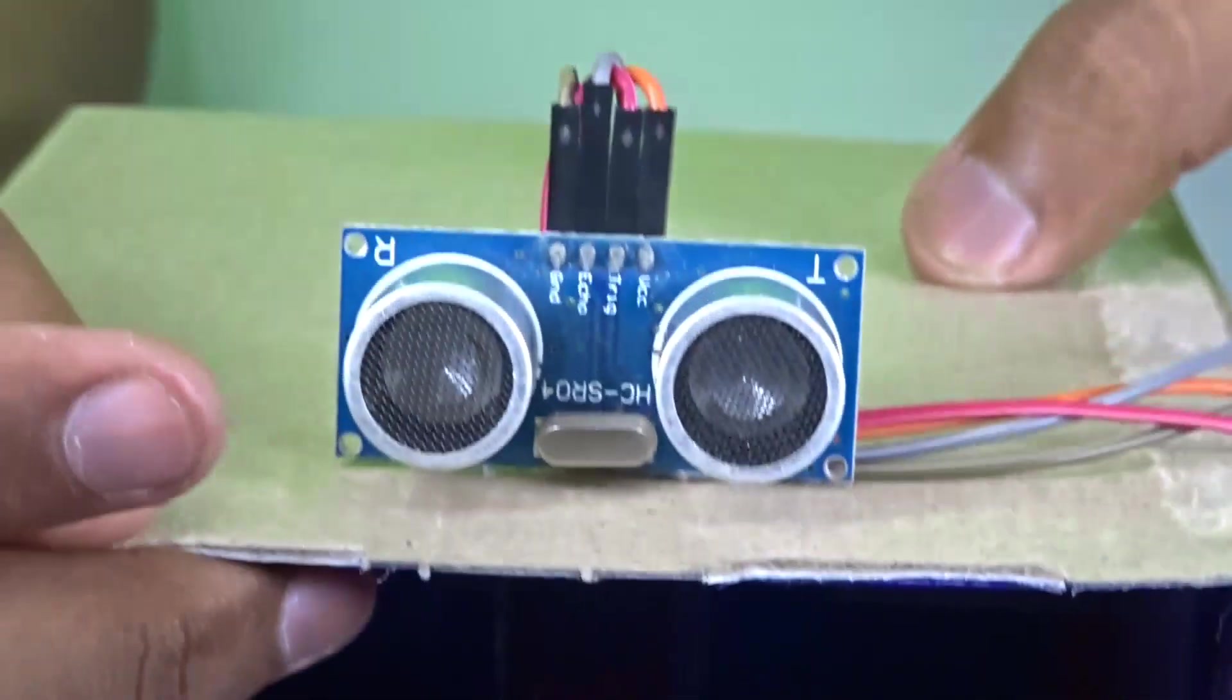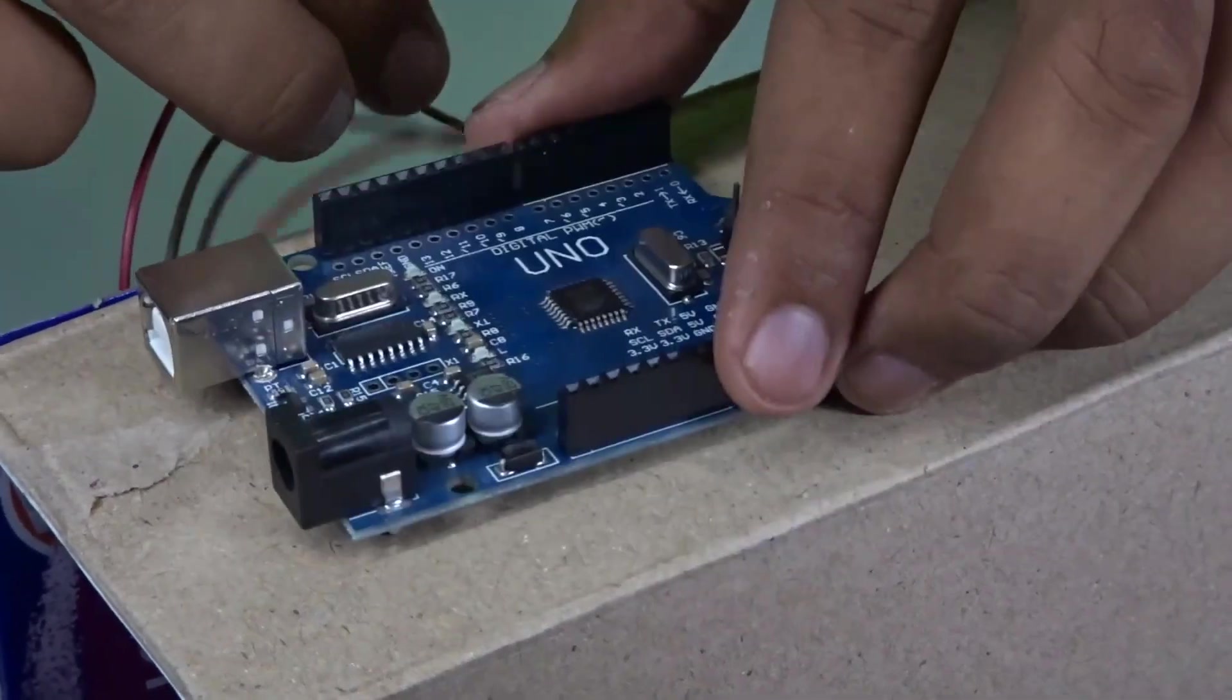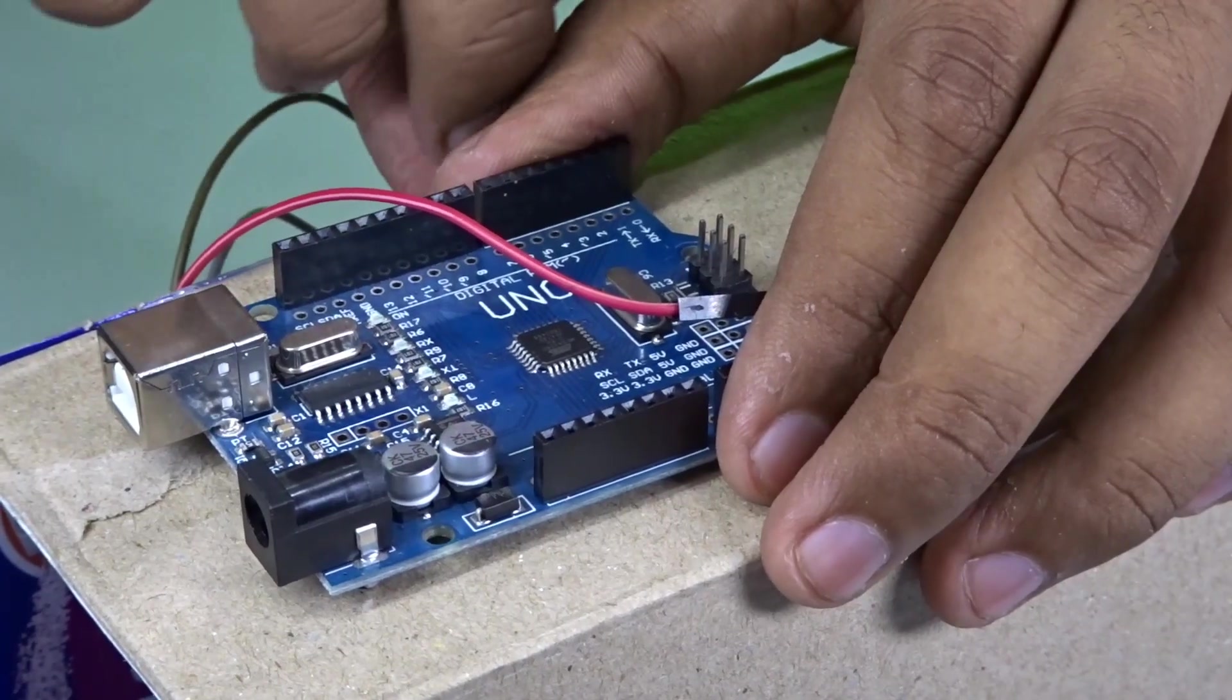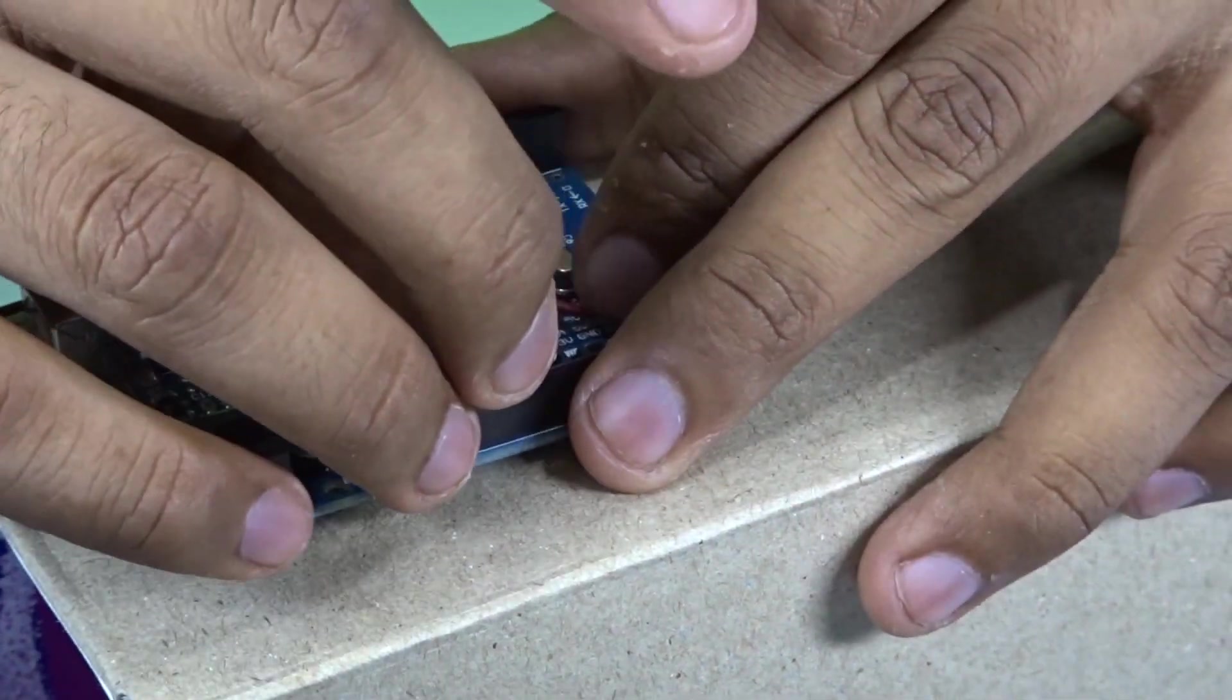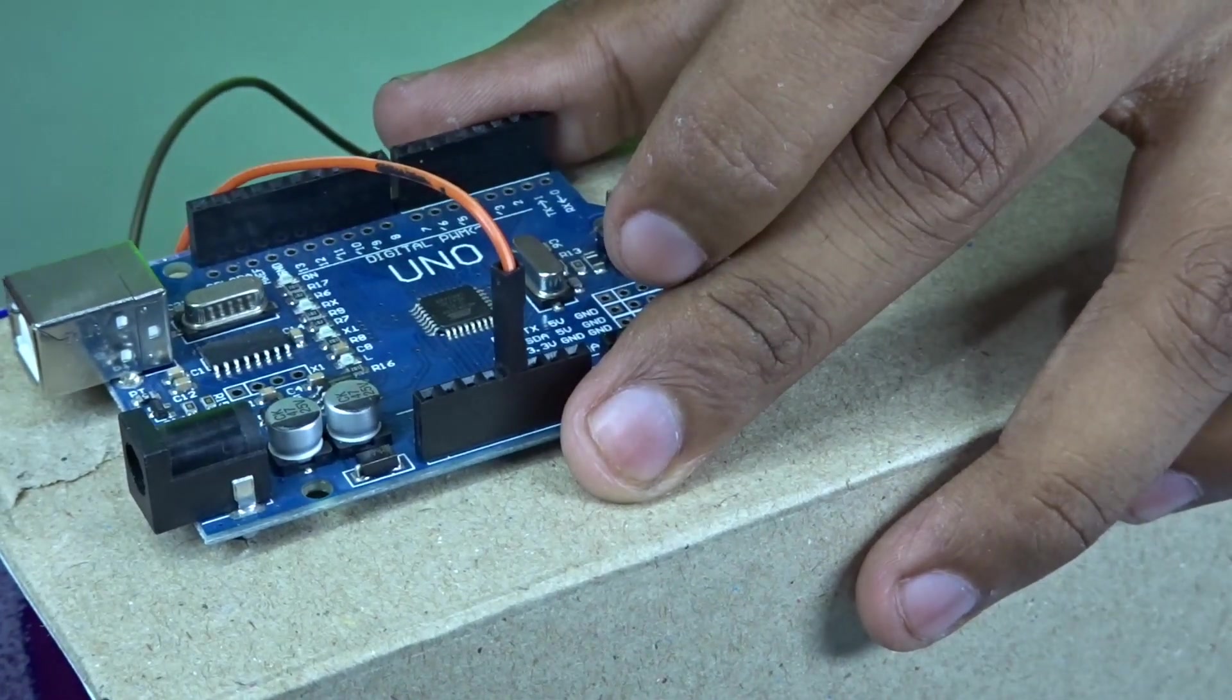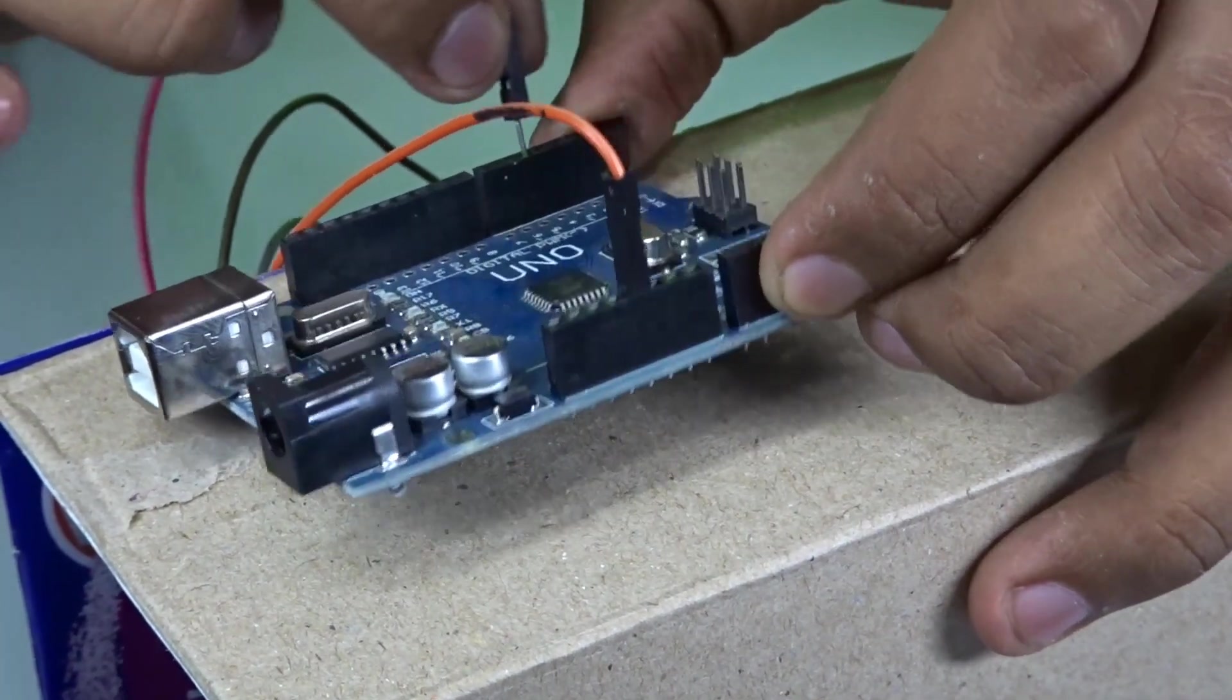So take your Arduino right here and connect the VCC which is the orange wire to the plus 5 volts of the Arduino which is right here. Then take the trigger pin which is the red wire and connect it to pin 5 of the Arduino which is right here.